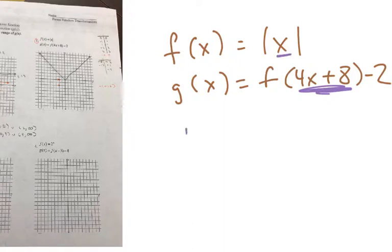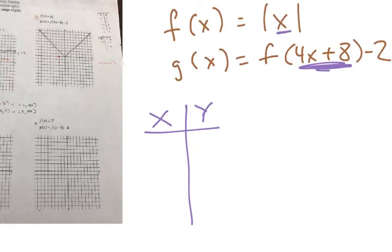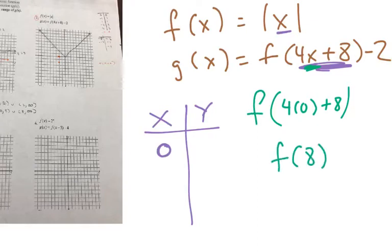So if you have a chart, what we do is you take your x value, let's say we start with 0, and I would take this 0 and I'm going to plug it in here. So we're going to do 4 times 0 plus 8. Now remember, we're doing f of this. So this gives me f of 8. Keep in mind that we are going to have to eventually subtract 2 as well.